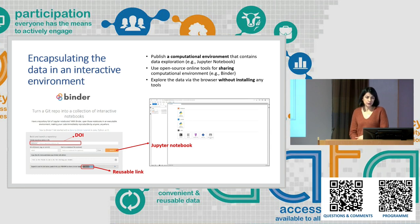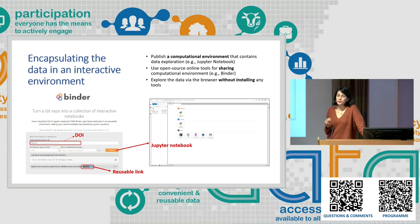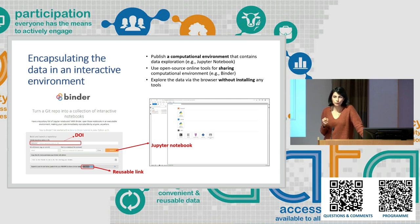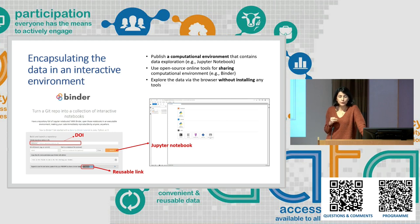The second idea is to encapsulate the data in an interactive environment. A data producer should provide a computational environment such as a Jupyter Notebook — a web application that lets you document code with formatted text and visualizations in one document. Using open-source tools and services, you can build and share this Jupyter Notebook so that users don't need to install any software. They just need internet access and a browser to open the notebook and start exploring the data. Data producers should prepare analyses they find useful for data users in the Jupyter Notebook and publish it alongside their data.